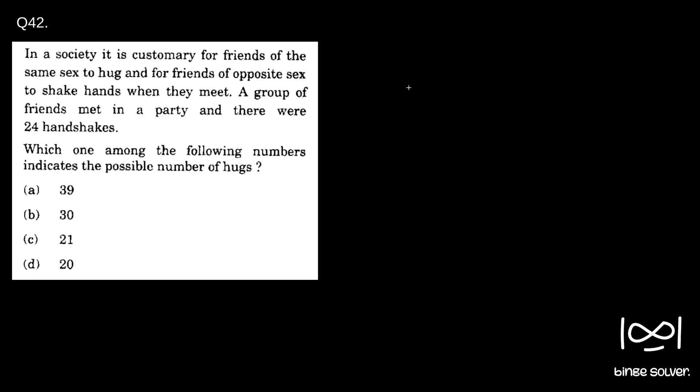Anyway, we will first figure out the formula for number of hugs and handshakes in this case. Let M be number of male people and W be number of woman. Number of woman. So if there is M and W woman, it is said a group of friends met in a party and there were 24 handshakes.